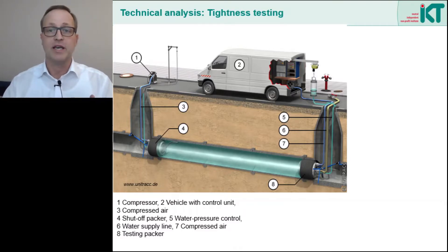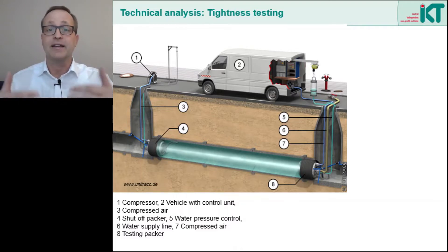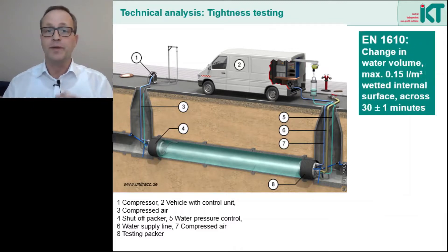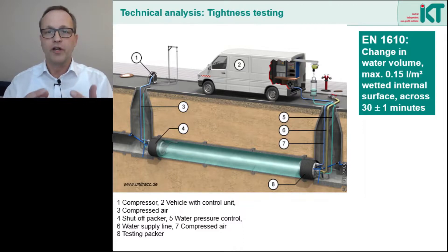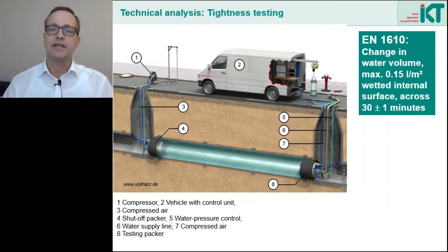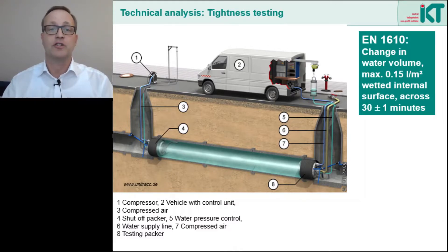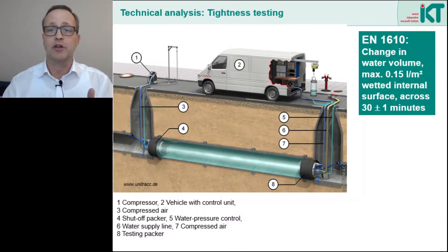The decisive factor is whether the water level in the vessel sinks over time or not. It has been agreed in standards that a slight drop is permissible. The vessel is filled again and again over the test period, and the amount of water needed is measured. In the European standard EN 1610, it is regulated by how much the water volume in the test chamber may change at most so that the test is still considered passed. That is 0.15 liters per square meter of wetted internal surface for a test of about 30 minutes. So what does that mean in concrete terms? If we test, for example, a sewer section of 50 meters in length...